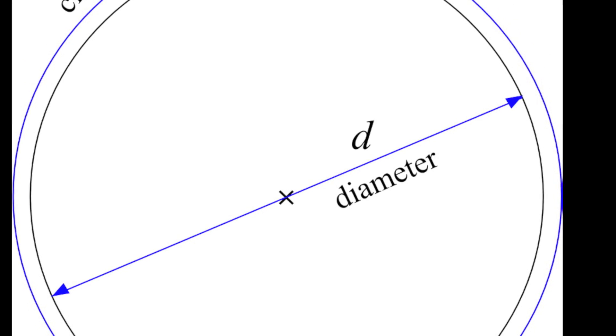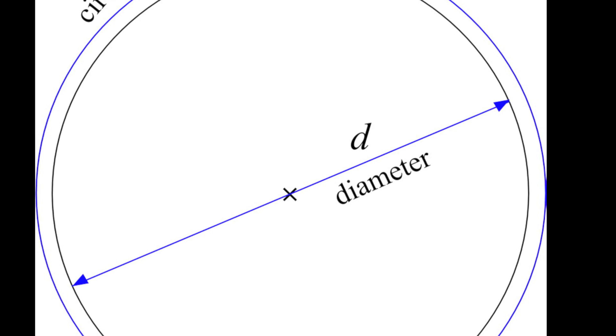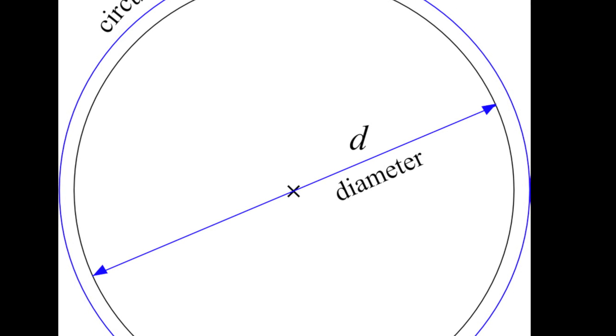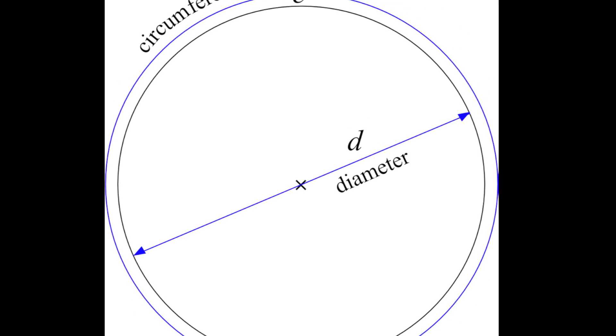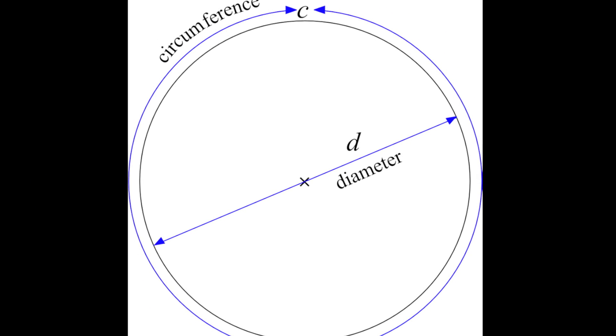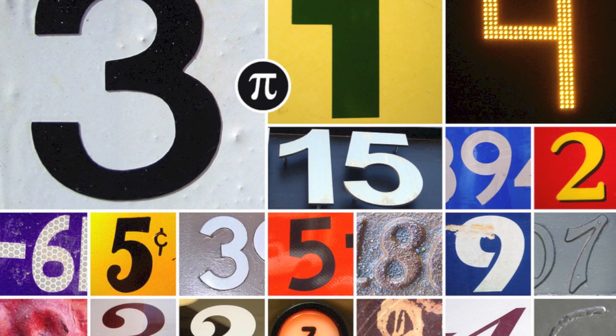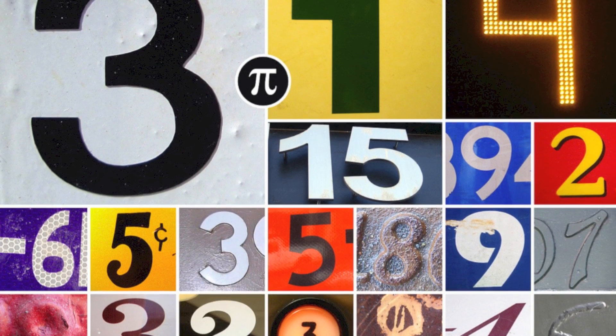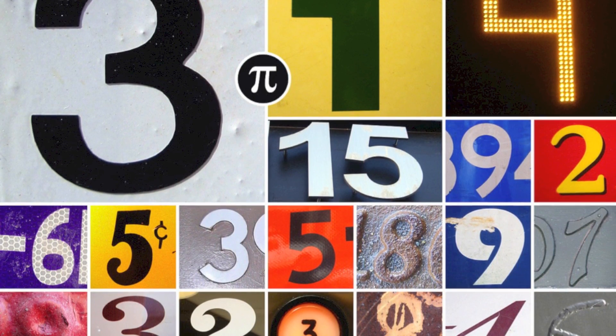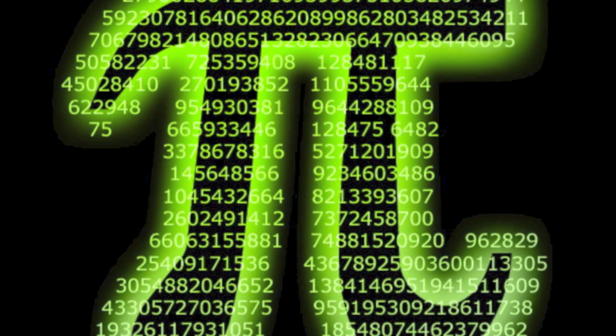Once upon a Pi, a certain relationship between the circumference of a circle and its diameter was discovered. It was a magical relationship which eventually led to the wonders of Pi.